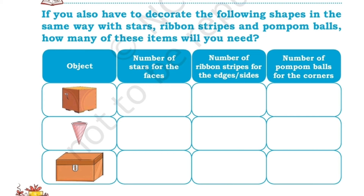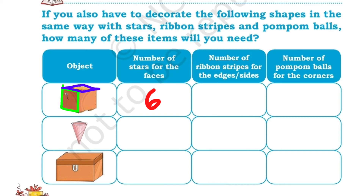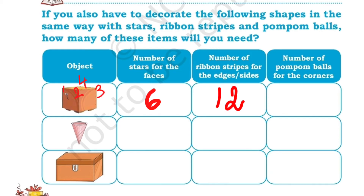If you also have to decorate the following shapes in the same way with stars, ribbon strips and pom-pom balls, how many of these items will you need? For a cube: number of stars for the faces — cube has six faces. One, two, three visible faces and there is a bottom face and two side faces, so we have six faces. We have 12 edges — the top, front, visible sides, two back sides and the bottom — so we need 12 ribbon strips. And corners — we have eight corners: four on top and four at the bottom.